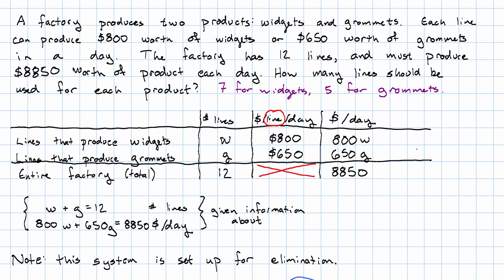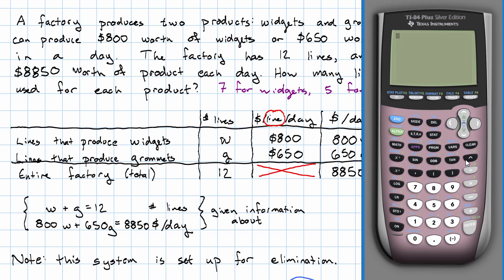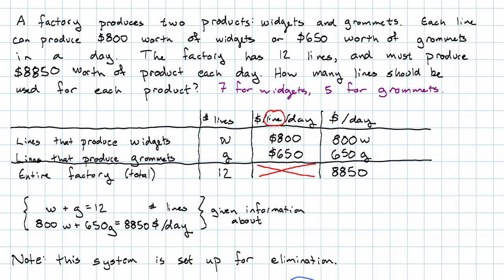Let's take a moment and make sure that we can make sense of that. If we have 7 lines making widgets, that'll be 7 times $800 from widgets. If we have 5 lines making grommets, that'll be 5 times $650 from grommets. That really is the $8,850 we said we would make. Notice, I didn't check it in my equations. I checked that answer in my original story. Why? Because I might make a mistake setting up my equations.